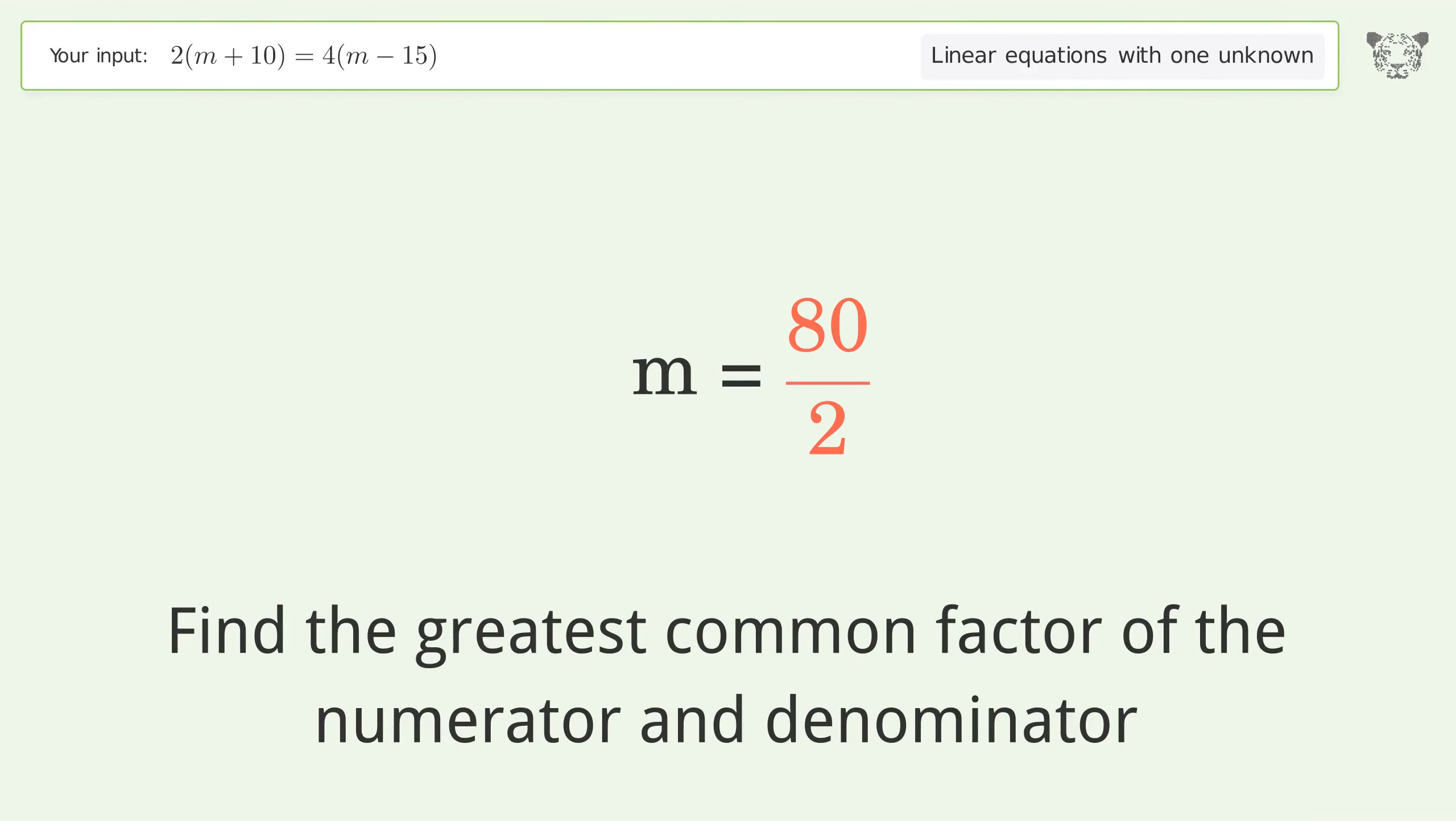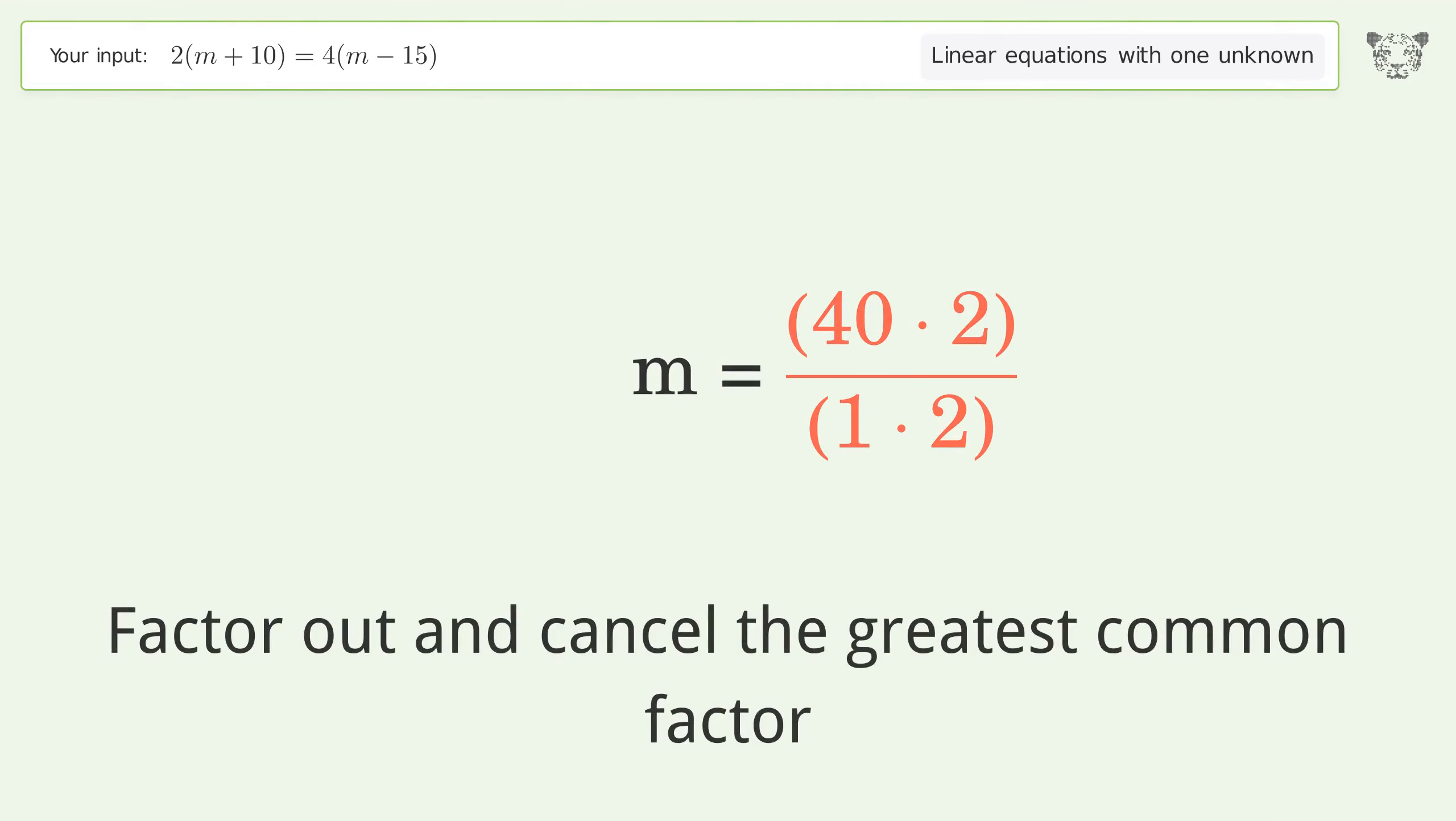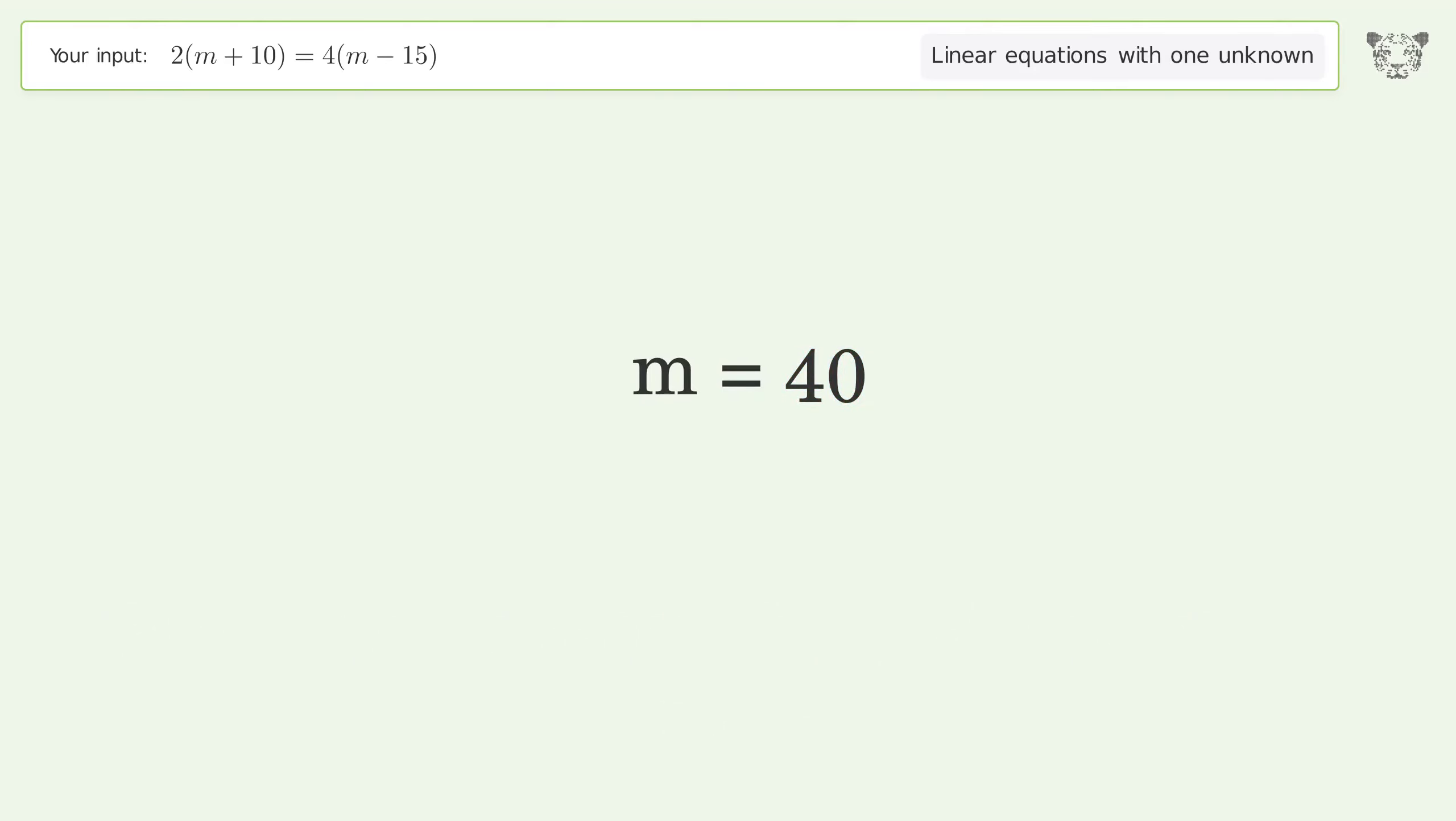Find the greatest common factor of the numerator and denominator. Factor out and cancel the greatest common factor. And so the final result is m equals 40.